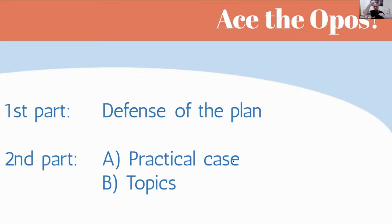In the practical case, they present a situation describing a school, a group of students, and usually the families of those students. They tell you how the school works — for example, if they work through projects or European projects. They ask you to plan one session inside that project, saying where you place it in the unit. Then they ask for the objectives/aims for that session, and in a third question, the assessment. Two years ago there were also two questions related to the theory topics.